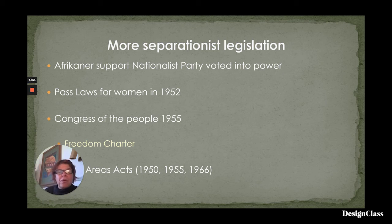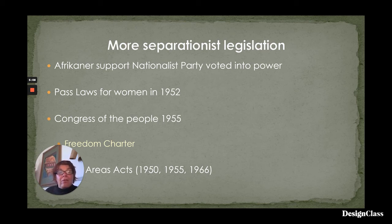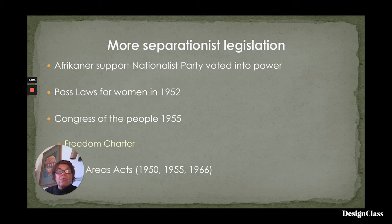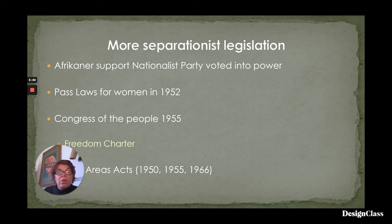Afrikaner support for the Nationalist Party meant that it was voted into power. Pass laws for African women were instituted in 1952, meaning that African women needed to carry passes to access cities, as with the Native Areas Urban Act in 1923. This led to a series of quite major resistances — one being the Congress of the People in 1955, out of which came the seminal document the Freedom Charter. The Freedom Charter considered that power to the people was absolutely fundamental, and the people should govern. These became the founding statements of a much stronger coordinated resistance against the ruling Nationalist Party, though because the signatories were not white, it operated pretty much underground for a significant period of time.